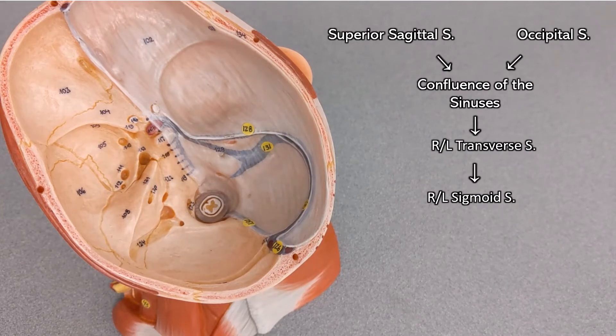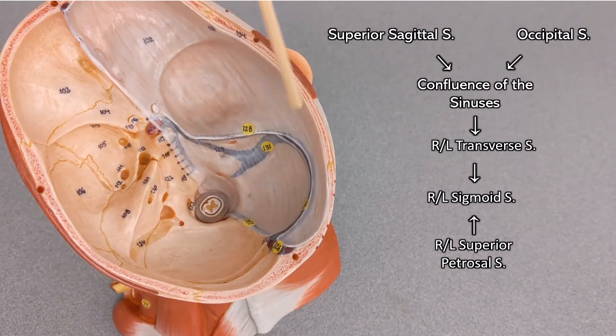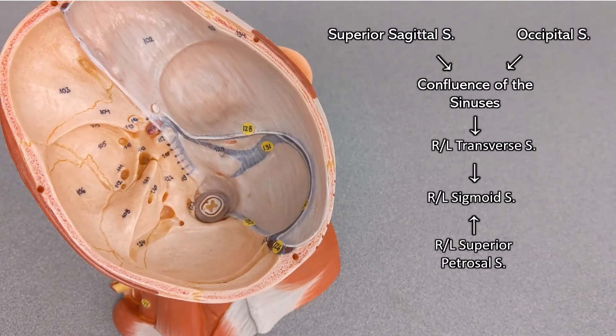Also meeting the sigmoid sinus is the superior petrosal sinus. It's superior petrosal because remember this part of the skull is the petrous region, the rocky ridge.